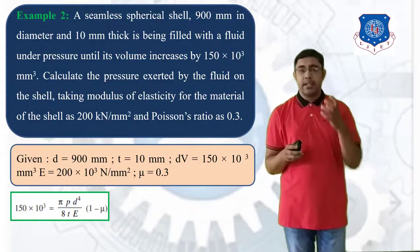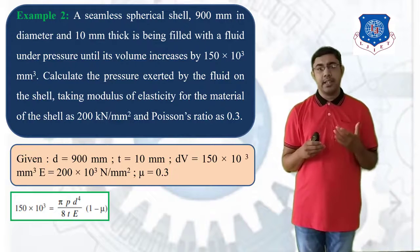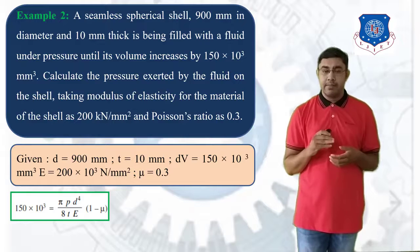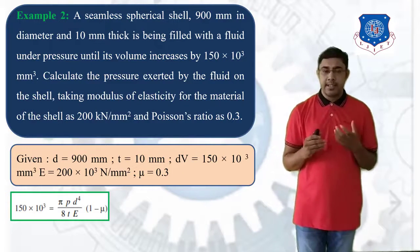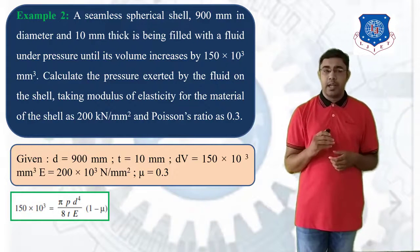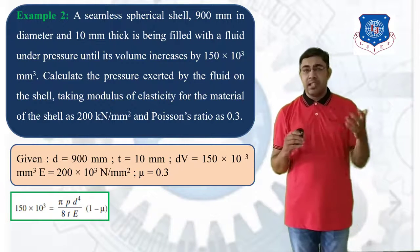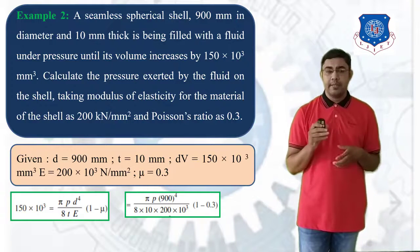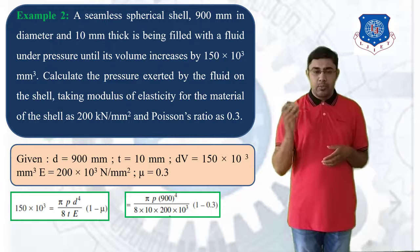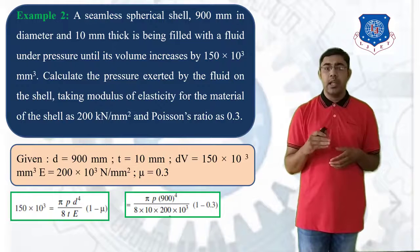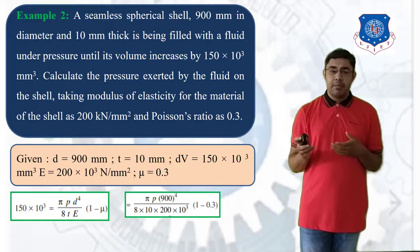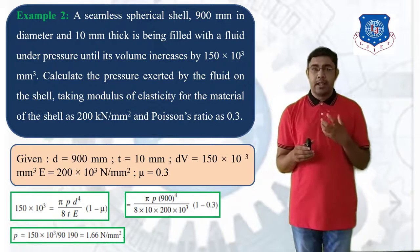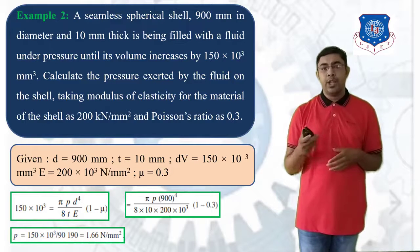We have to calculate the pressure P. Placing all values — D = 900 mm, T = 10 mm, E = 200 × 10³ N/mm², and nu = 0.3 — into the equation: 150 × 10³ = (π × P × 900⁴) / (8 × 10 × 200 × 10³ × (1 − 0.3)). Simplifying, the pressure exerted by the fluid is 1.66 N/mm².